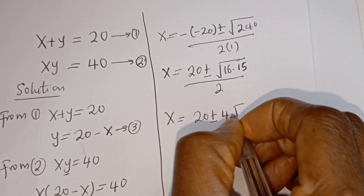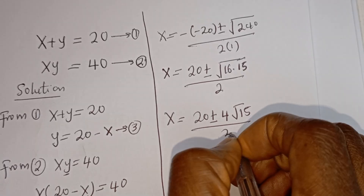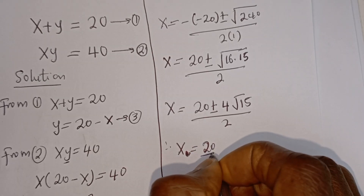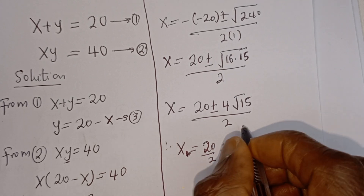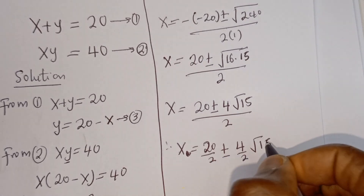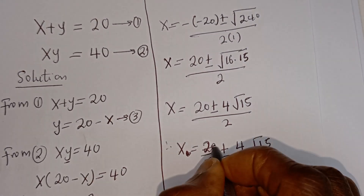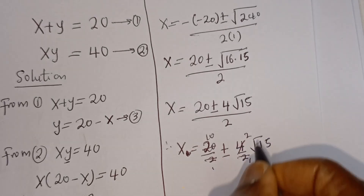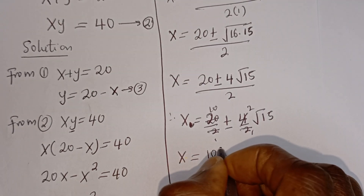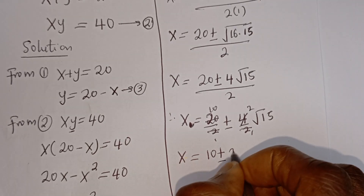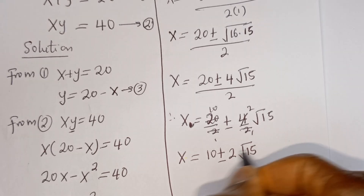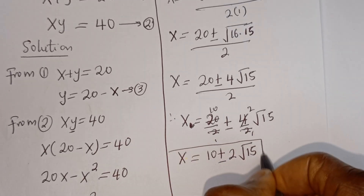Then x is equal to 20 plus or minus square root of 16, which is 4, then root 15, all over 2. Therefore, x is equal to 20 over 2 plus or minus 4 over 2 root 15. x is equal to 10 plus or minus 2 root 15. This is the value of x.